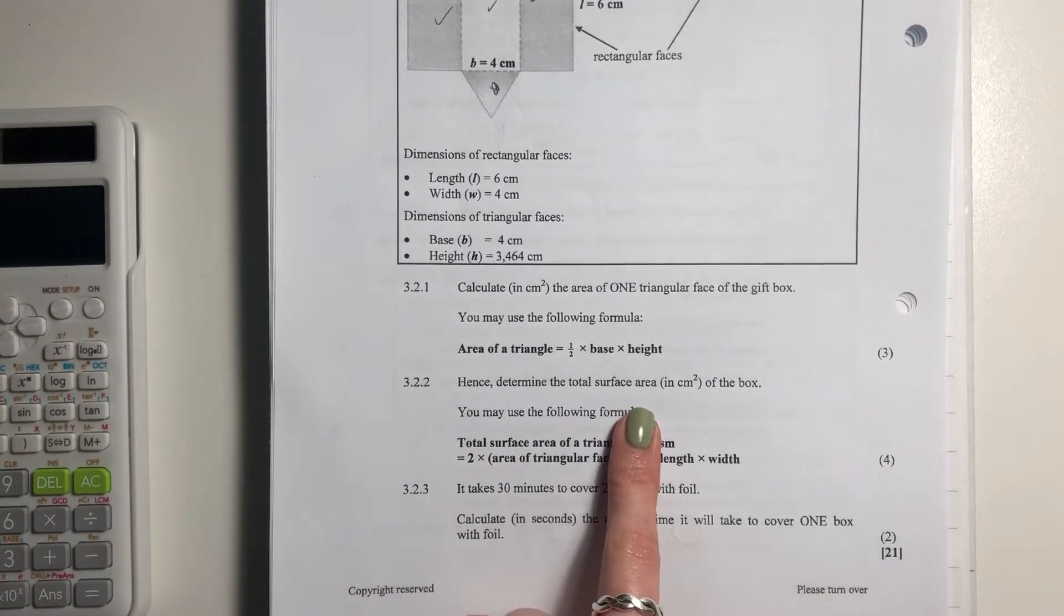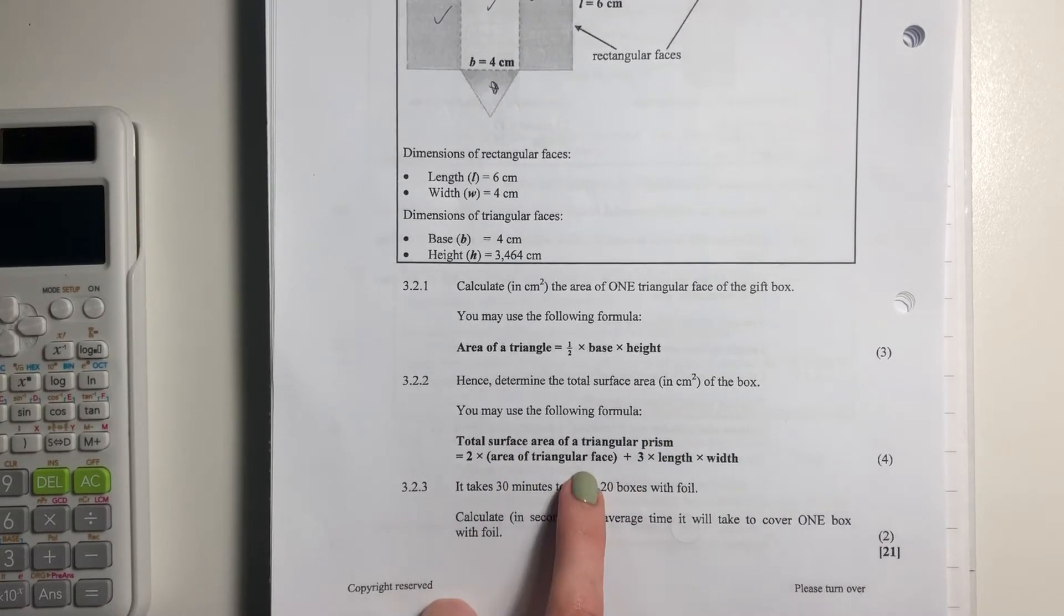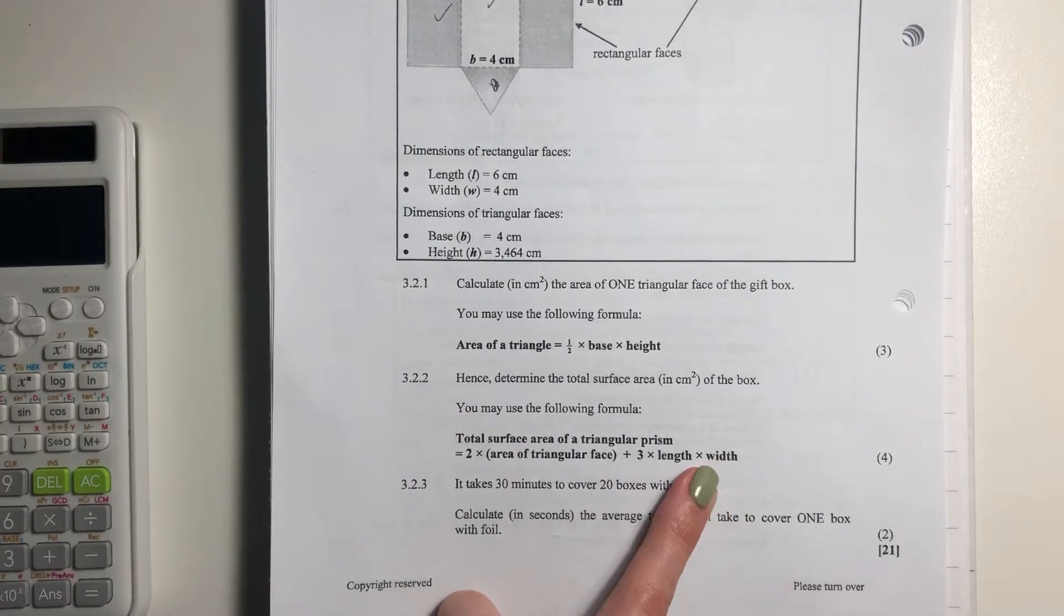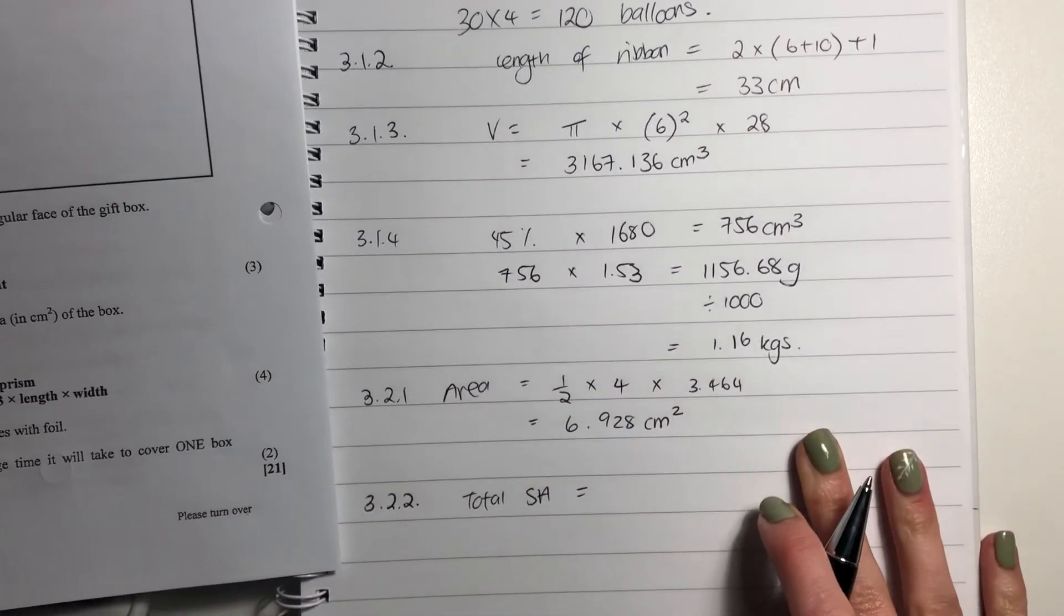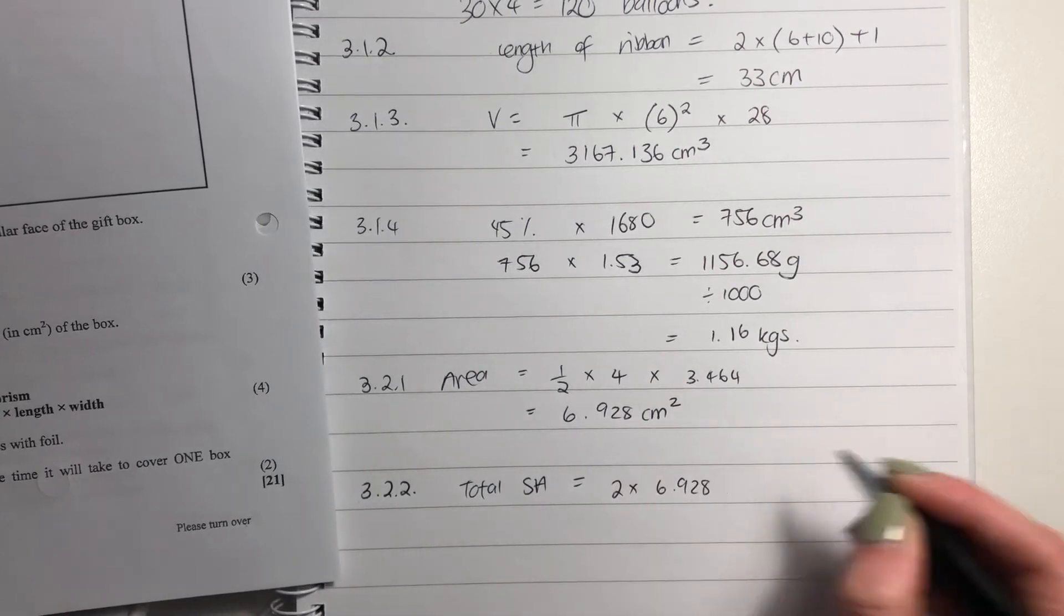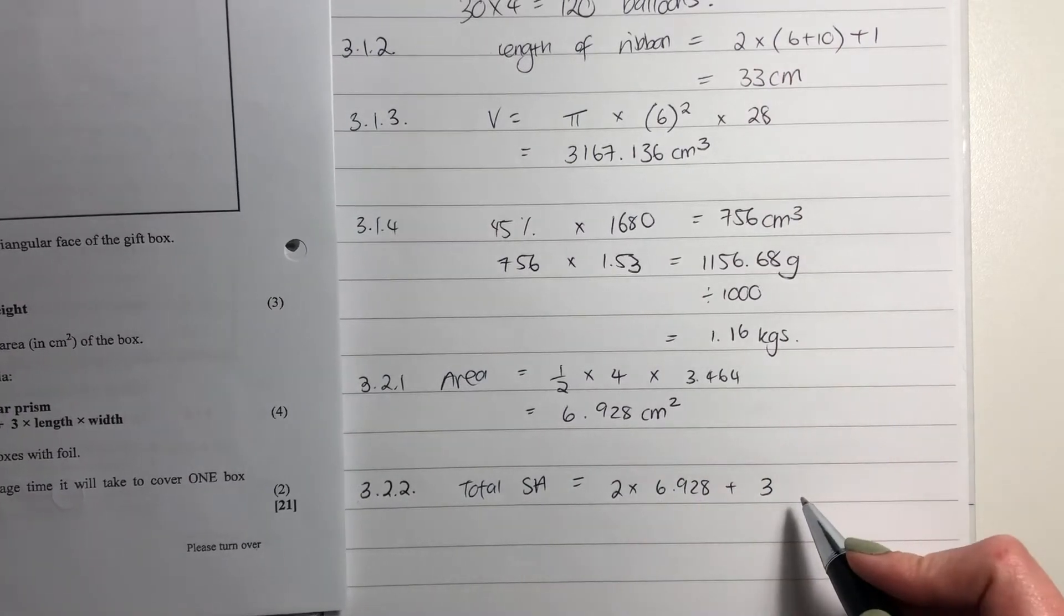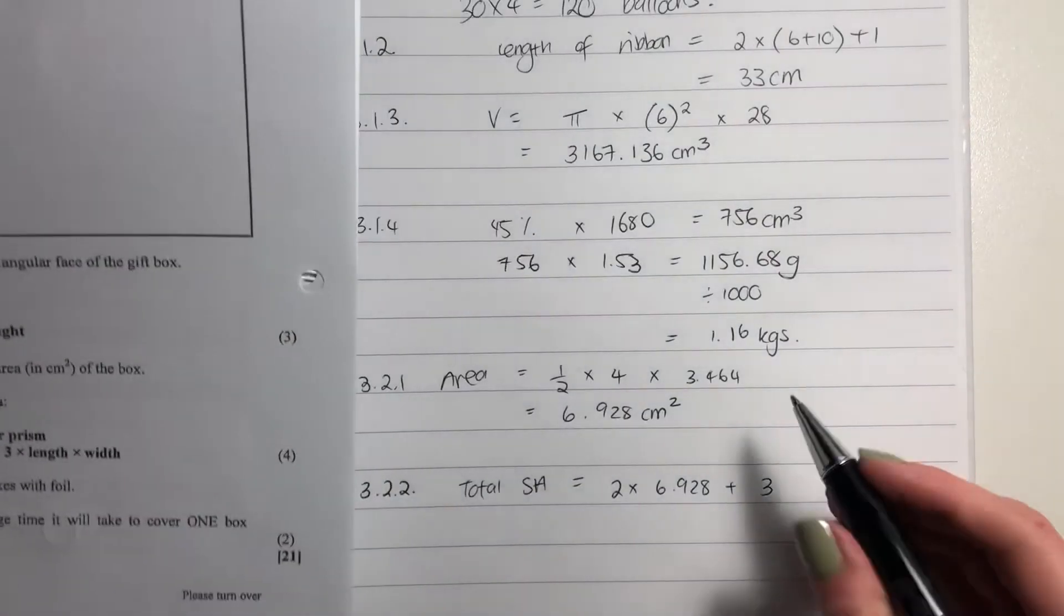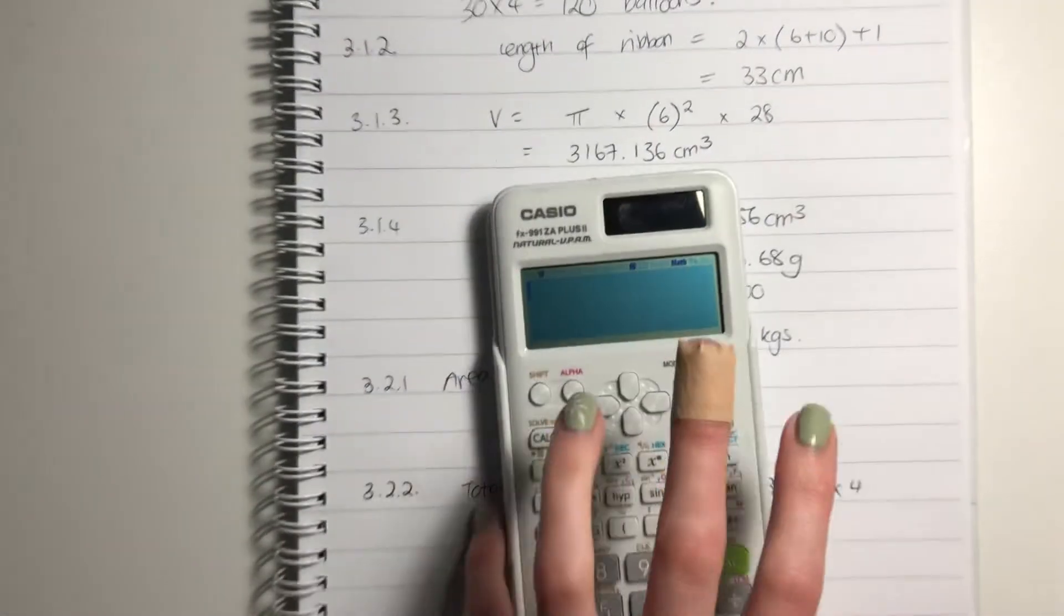Hence, determine the total surface area of the box. You may use the following formula. So two times the triangular face area, which we just worked out, and three times the length and width of the rectangular face. So let me say here, total surface area is going to equal 2 times 6.928 plus 3. Why is this 2 and why is that 3? Well, there's two triangular faces and three rectangular faces. The length is 6 and the width is 4. So times 6 times 4. We're going to just plug this into our calculator.